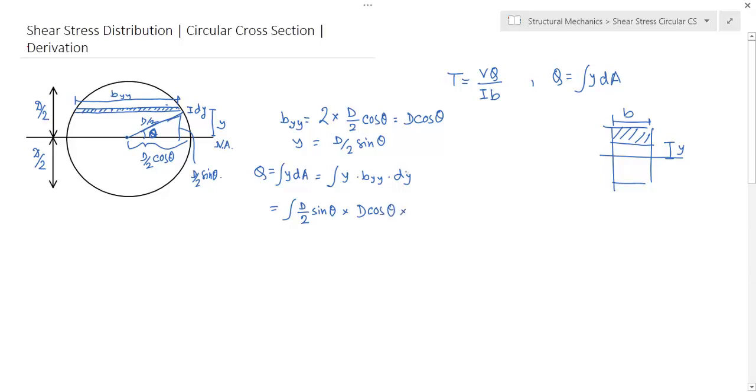Write down the terms in terms of D and theta. So y is D/2 sin theta, B_y is D cos theta. What is dy? If y equals D/2 sin theta, so dy will be D/2 cos theta d theta.